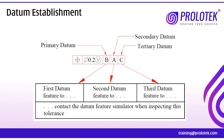What we have here is three datums: primary datum as B, secondary datum as A, and tertiary datum as C. We call this the order of precedence. Order of precedence means whichever comes in the third compartment of a feature control frame takes the top priority for taking the reference — it could be for manufacturing or for inspection. Here, B will become the first datum feature which will come in contact with the datum feature simulator first. A, being in the fourth compartment, will take the second priority.